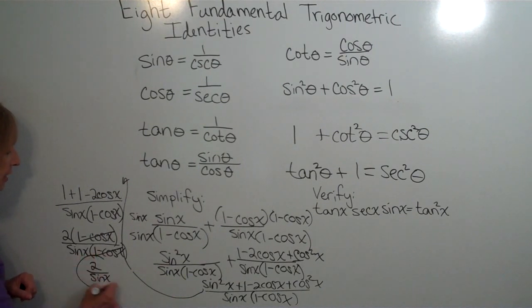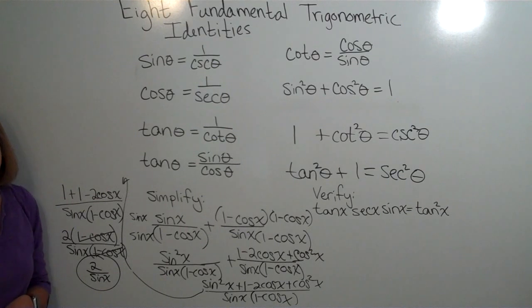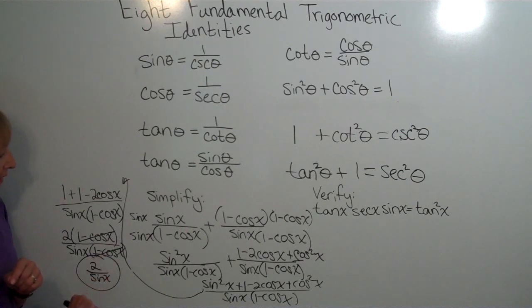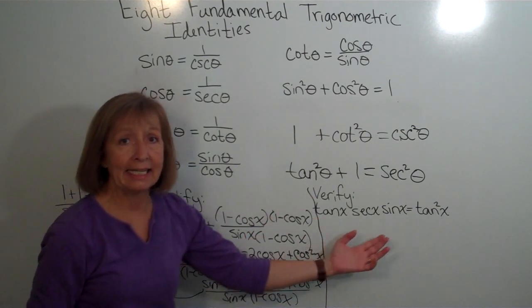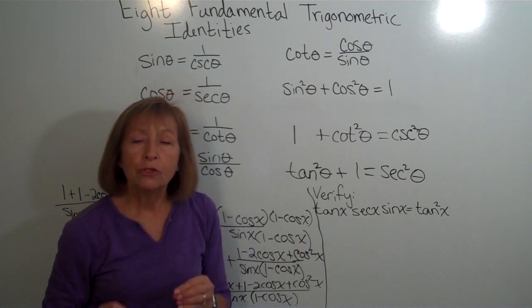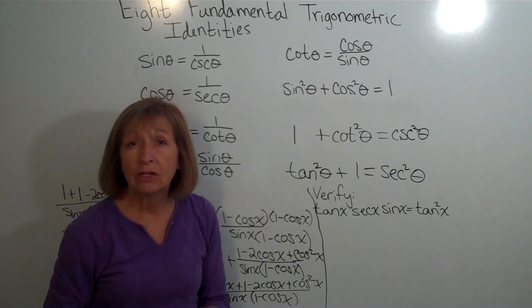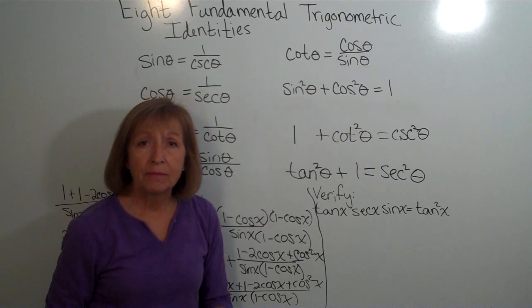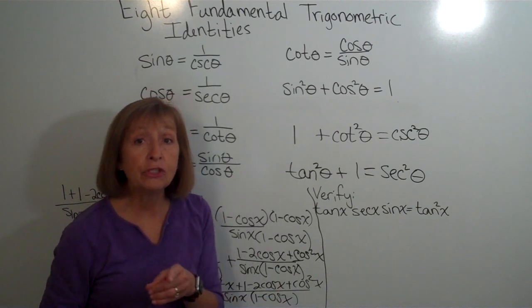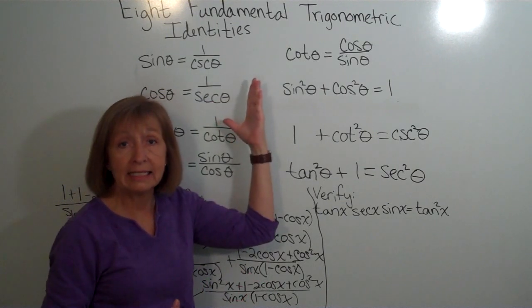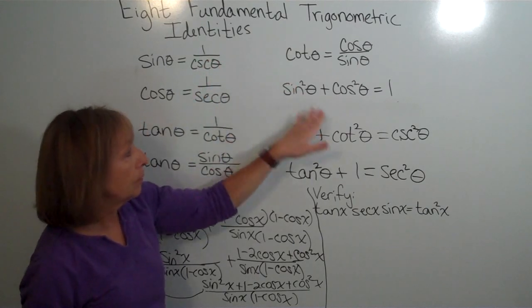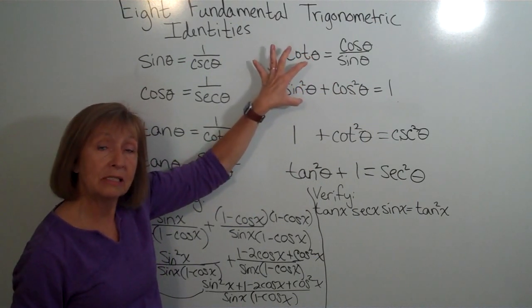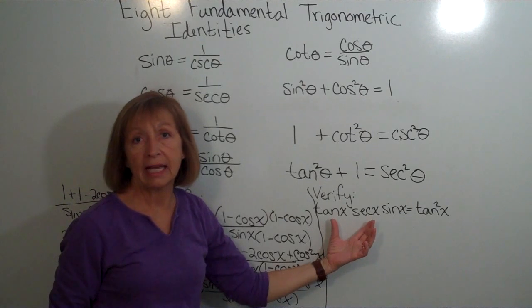We saw a similar expression in an earlier video, but it was before we worked with trig identities, so we left it without making that substitution. When verifying an identity, you cannot move things from the left side of the equal sign to the right side, nor can you multiply both sides by the same quantity — because you're verifying the identity, you don't know it is one yet. What you can do is make substitutions from identities you already know, or rearrange terms of known identities. You just can't rearrange side to side of the one you're verifying.